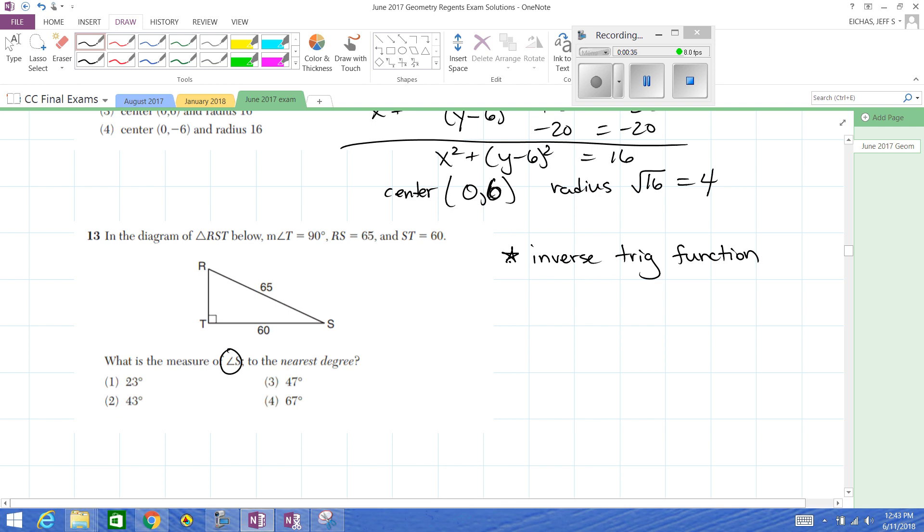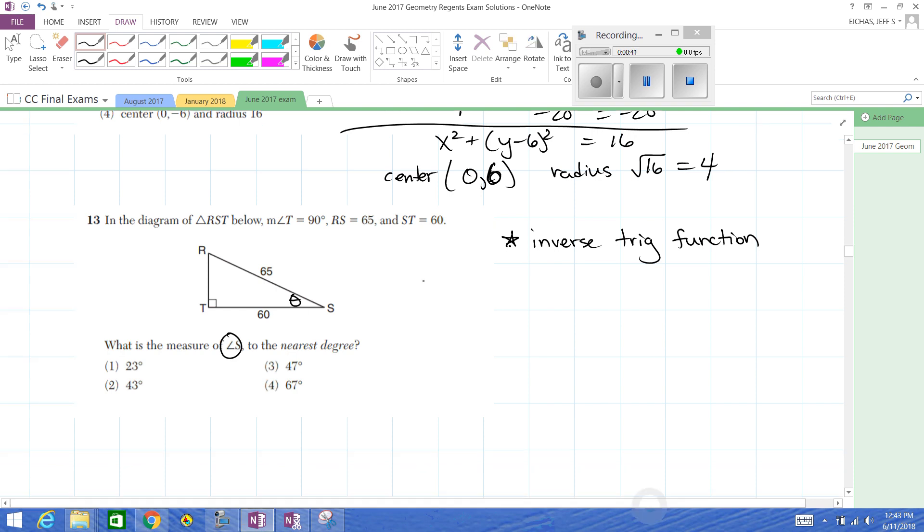Now they want to know the measure of angle S. Let's say that is our theta. We usually call it theta, could call it X or theta. In case you see that, it's just another way of saying it's an unknown angle. If this is the angle I'm interested in, the leg that's adjacent to it is right here with a 60. This is the opposite leg, and this of course is the hypotenuse.